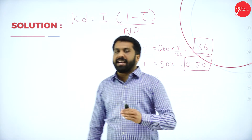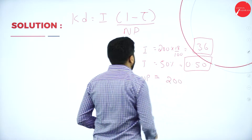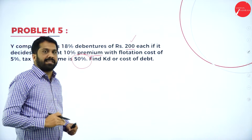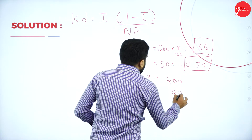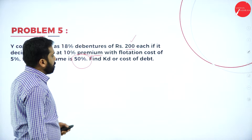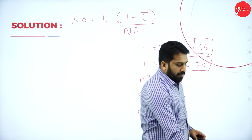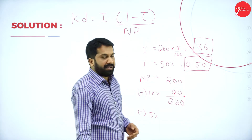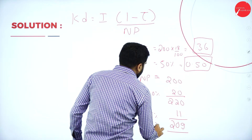Now for net proceeds, same as the previous problem. Start with 200. The company decides to issue at ten percent premium - premium means add. So add ten percent: ten percent of 200 is 20, giving 220. Flotation cost is five percent. Calculate five percent on 220: 220 into five percent gives 11 rupees. Subtract flotation: 220 minus 11 equals 209. So your net proceeds is 209.